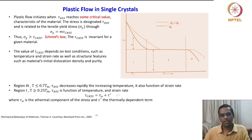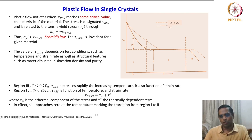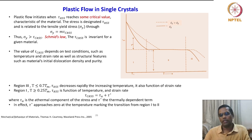tau_CRSS has two terms: tau_A, the temperature-independent athermal component, and tau*, the temperature-dependent term. In effect, tau* approaches 0 at the temperature marking the transition from region 1 to region 2, because the temperature-dependent component tau* is 0 in region 2.